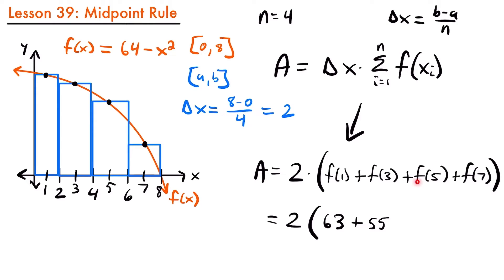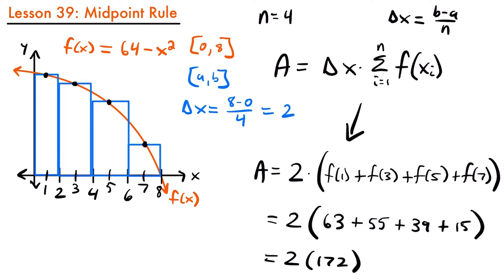Then f(5) equals 64 minus 5 squared, which is 64 minus 25, equal to 39. And f(7) equals 64 minus 7 squared, which is 64 minus 49, equal to 15. Adding all these numbers together: 2 times 172, which equals 344.